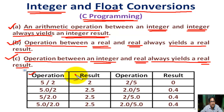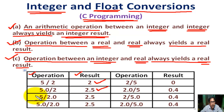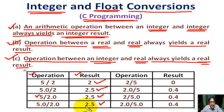Let's look at examples. 5 divided by 2: integer by integer gives integer result 2. 5 divided by 2.0: integer by real gives real value 2.5. 5.0 divided by 2.0: real by real gives real result 2.5.